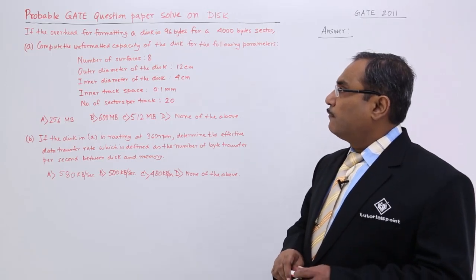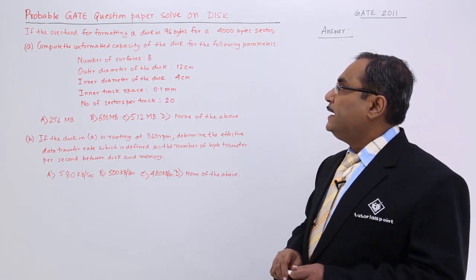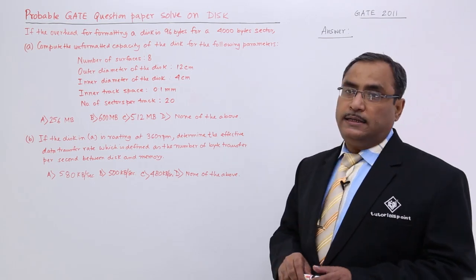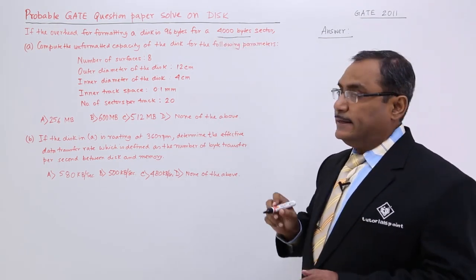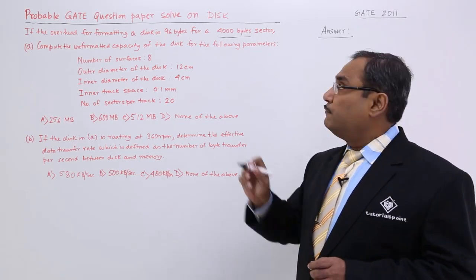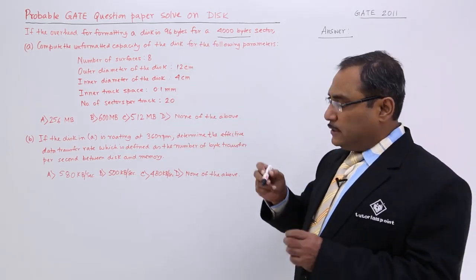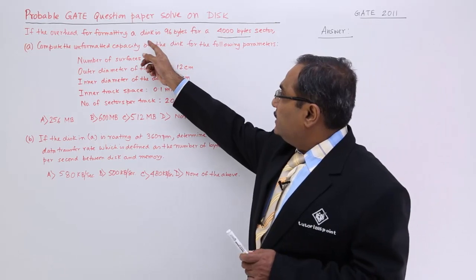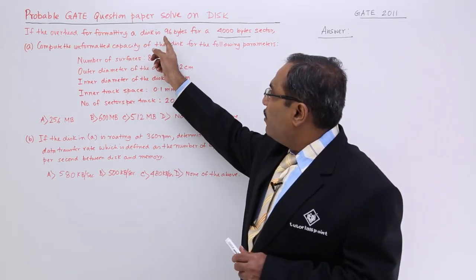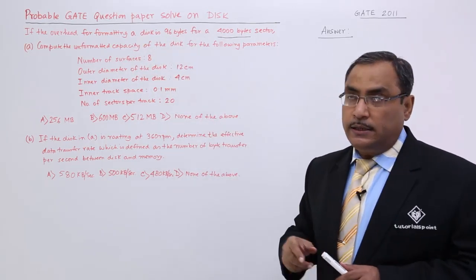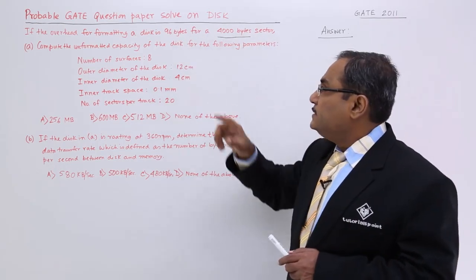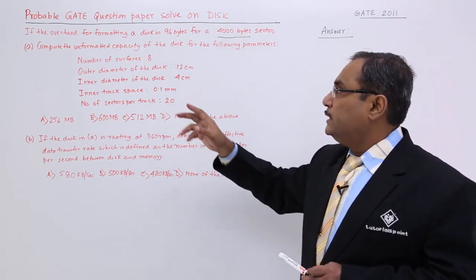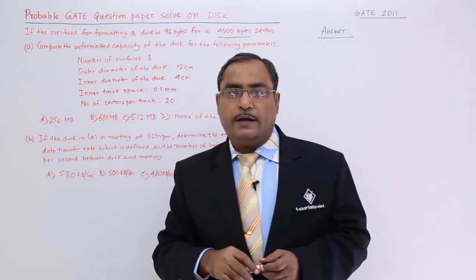If the overhead for formatting a disk is 96 bytes for a 4000 bytes sector. So one important piece of information is that the sector size is 4000 bytes. Now, the overhead is 96 bytes — meaning out of this 4000 byte sector size, 96 bytes of overhead will be there if the disk is formatted.